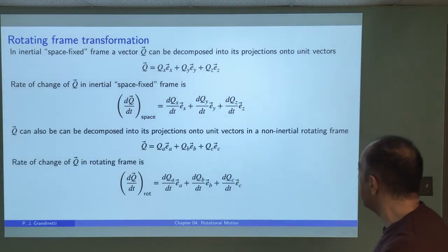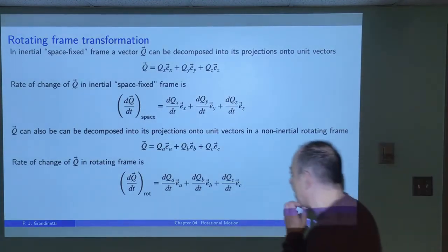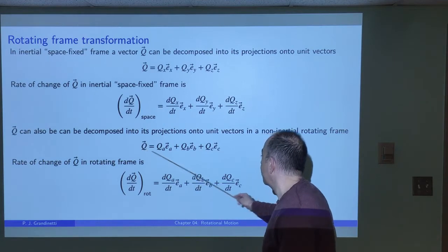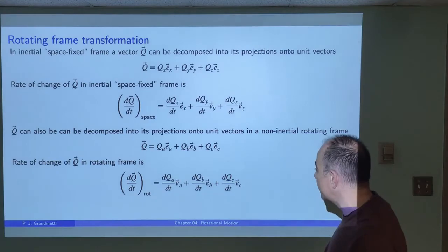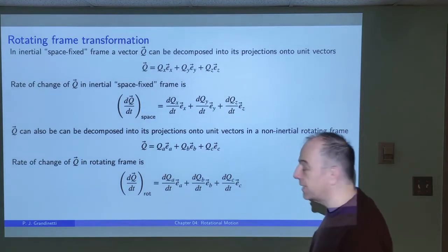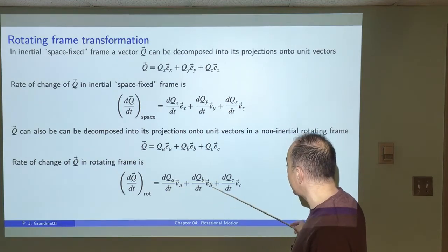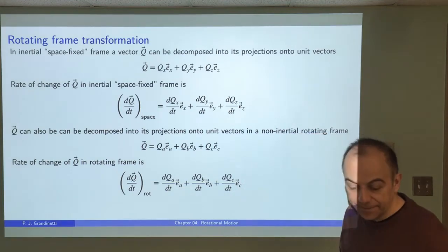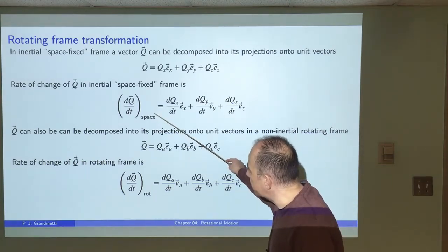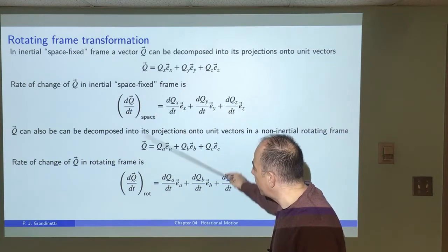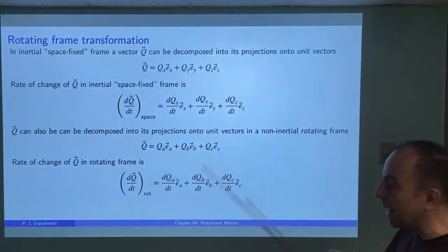If we're thinking about this problem in the body-fixed frame — the non-inertial rotating frame — we write the Q vector in terms of ea, eb, and ec with the components. The rate of change in that frame looks like dQa/dt times ea, dQb/dt times eb, and dQc/dt times ec. But what we'd like to know is how the rate of change in the space-fixed frame is related to the rate of change in the rotating frame, because these are two different time dependencies.